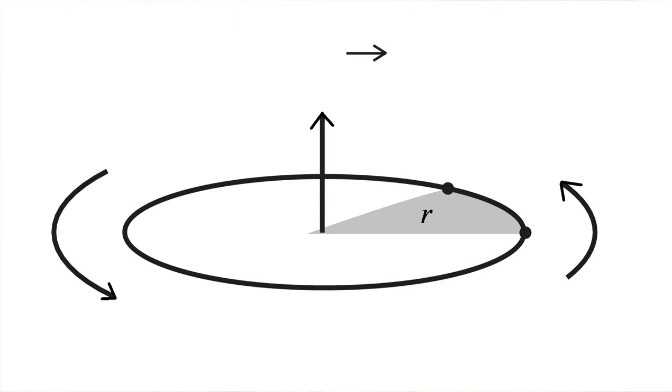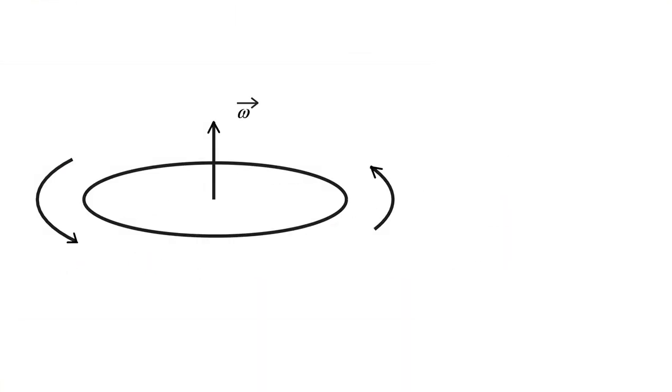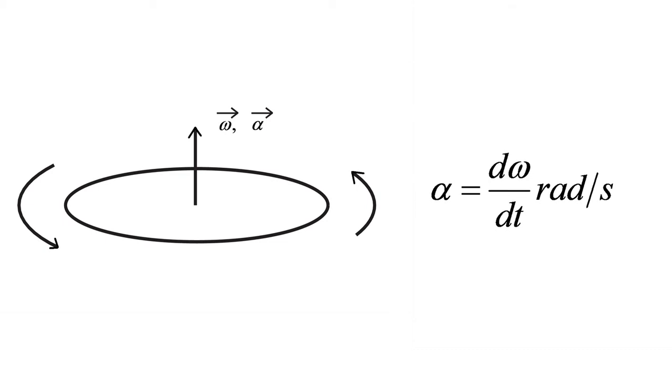To describe circular motion, we define angular displacement, angular velocity, and angular acceleration. Angular displacement is the angle traced by the radius vector, and angular velocity is the rate of change of angular displacement, whereas angular acceleration is the rate of change of angular velocity.